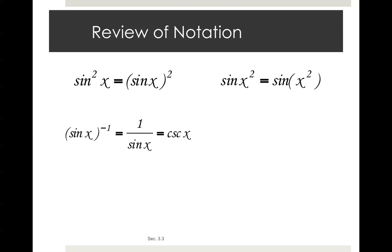Sine of x to the negative 1, the inverse, is 1 over sine of x, which equals cosecant of x. Sine x to the negative 1 equals sine times 1 over x. Sine to the negative 1 x equals arc sine x, the inverse sine of x.